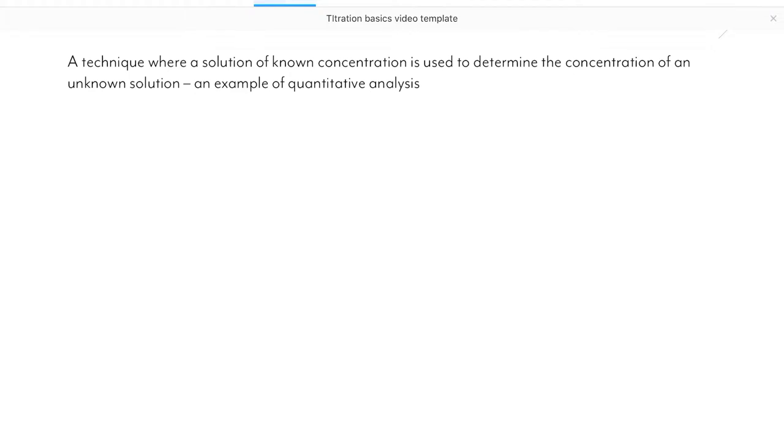A titration is a technique where we can use the known concentration of one solution to find the concentration of another solution. There are two basic types of titration, one is acid-base and one is redox, but they follow the same principles.